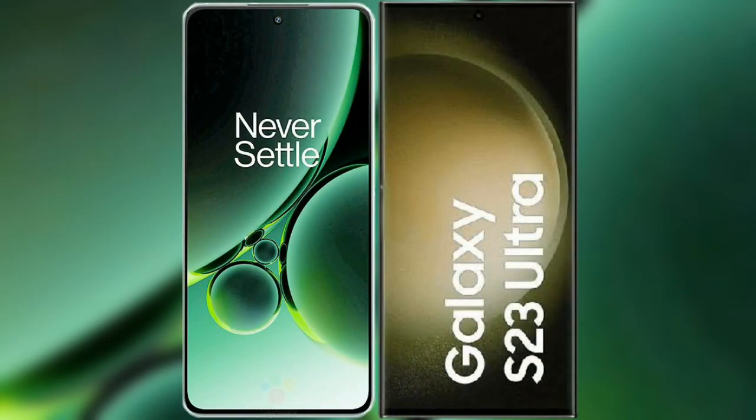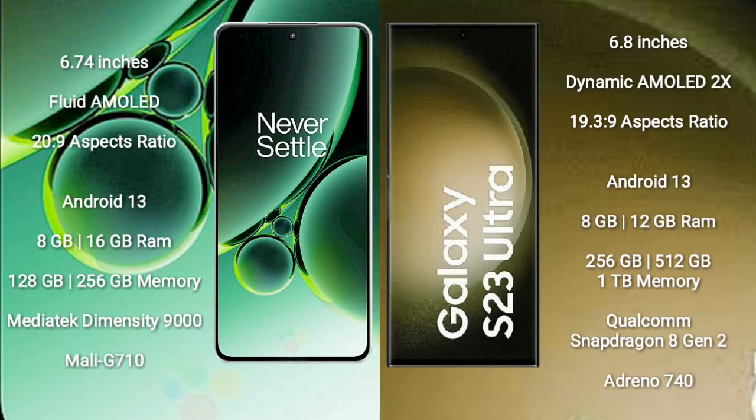I will compare the new OnePlus Nord 3 with Samsung Galaxy S23 Ultra. OnePlus Nord 3 comes with a 6.74-inch flat AMOLED display and a 20:9 aspect ratio. Samsung Galaxy S23 Ultra comes with a 6.8-inch dynamic AMOLED display and a 19.3:9 aspect ratio.